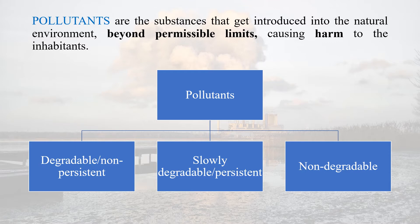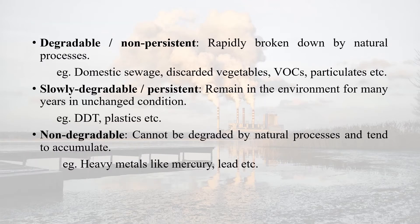Pollutants can be divided into three main types: degradable or non-persistent pollutants, slowly degradable or persistent pollutants, and non-degradable pollutants. The degradable or non-persistent pollutants are those that are rapidly broken down by natural processes, like domestic sewage, discarded fruit and vegetable peels, volatile organic compounds or VOCs, and particulate matter. Slowly degradable or persistent pollutants remain in the environment for many years in an unchanged condition, like DDT, plastics, and CFCs. Finally, the non-degradable pollutants cannot be degraded by any natural process and tend to accumulate in the environment. Examples are heavy metals like mercury and lead.